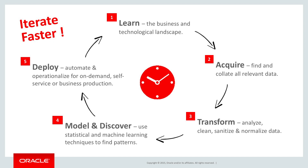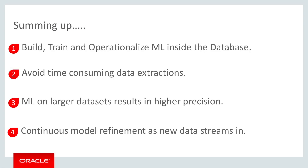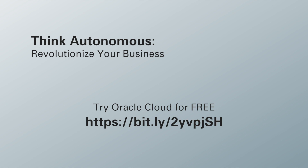Deriving insights from data by applying machine learning is an iterative process. The ML features built into OAC enable iterating through models without writing any code — the tool writes the code for you. Doing this in a self-driven, highly available cloud database with built-in machine learning capability optimizes the entire process. Projects like these, which could take years, can be done in a week or a month. Build, train, and operationalize by leveraging ML algorithms running in parallel on the entire data — no wasting time extracting data, better precision due to larger datasets, and a continuous adaptive process that refines the model as new data streams in. Thanks for watching. You can try out our cloud services for free using the link.